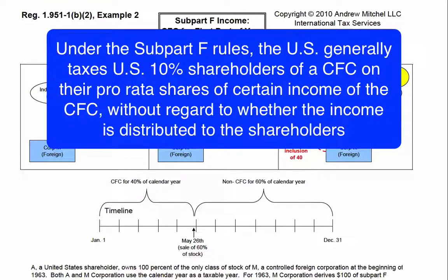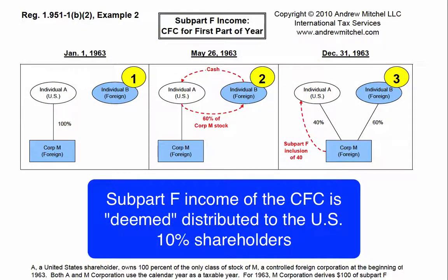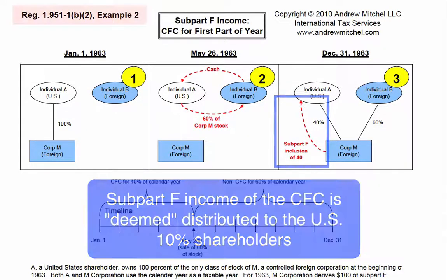Under the Subpart F rules, the U.S. generally taxes U.S. 10% shareholders of a CFC on their pro-rata share of certain income of the CFC, without regard to whether the income is distributed to the shareholders. Thus, Subpart F income of the CFC is deemed distributed to the U.S. 10% shareholders.